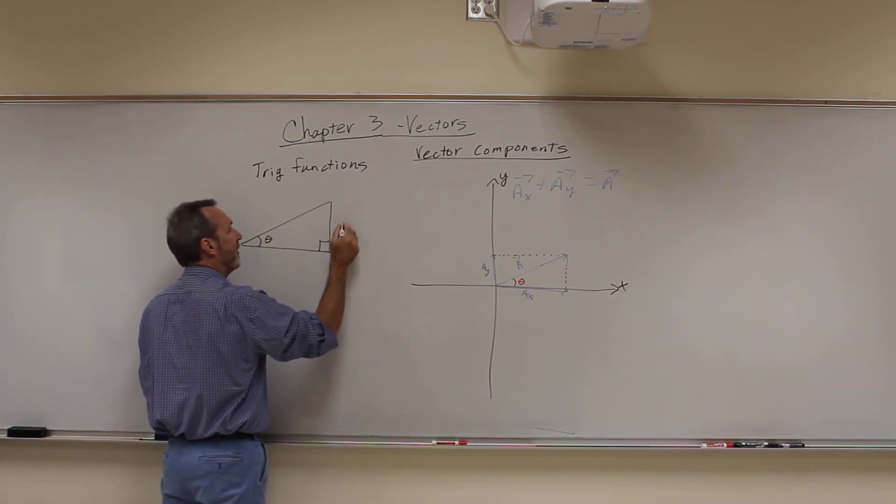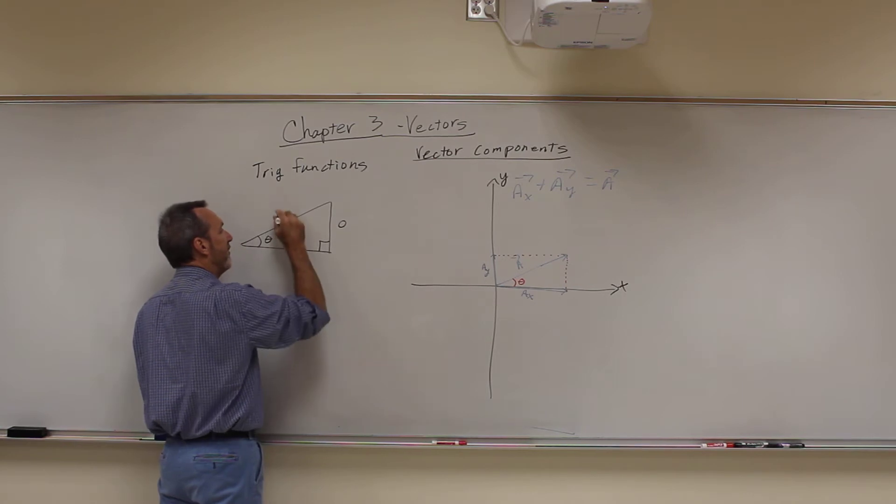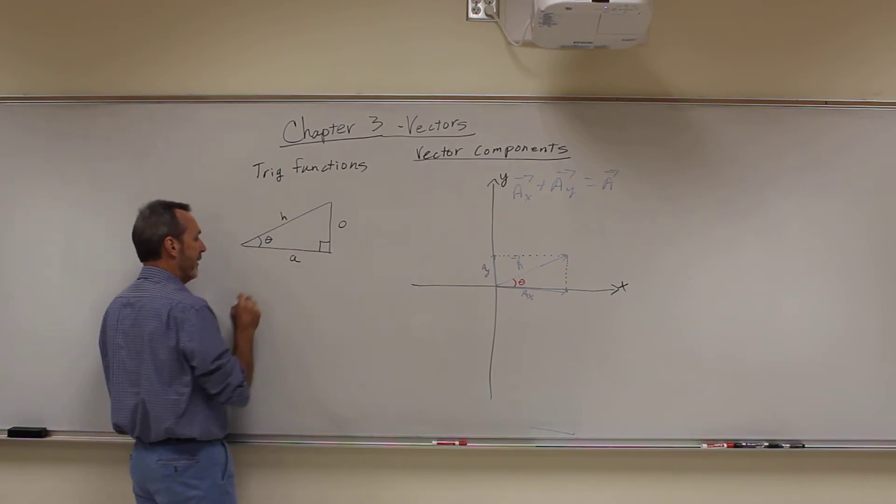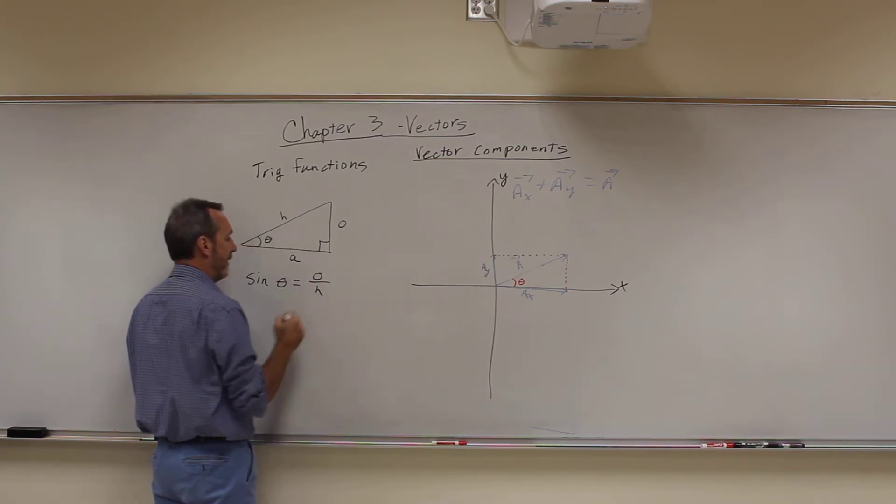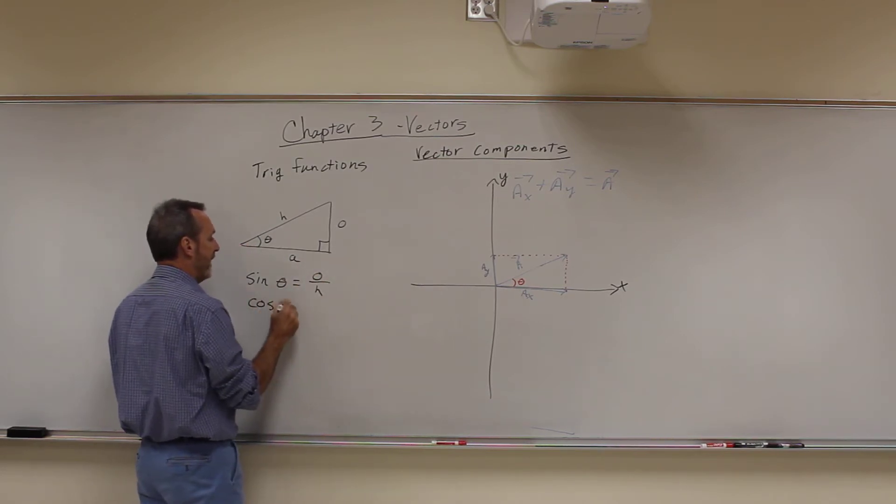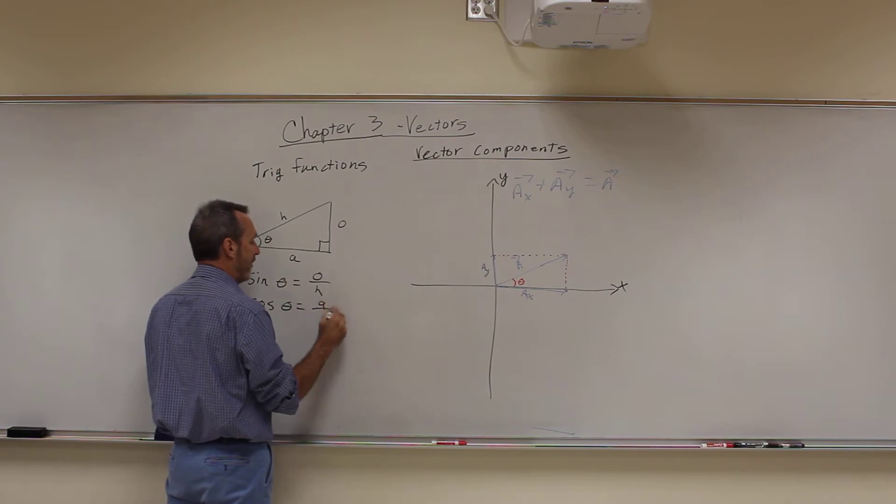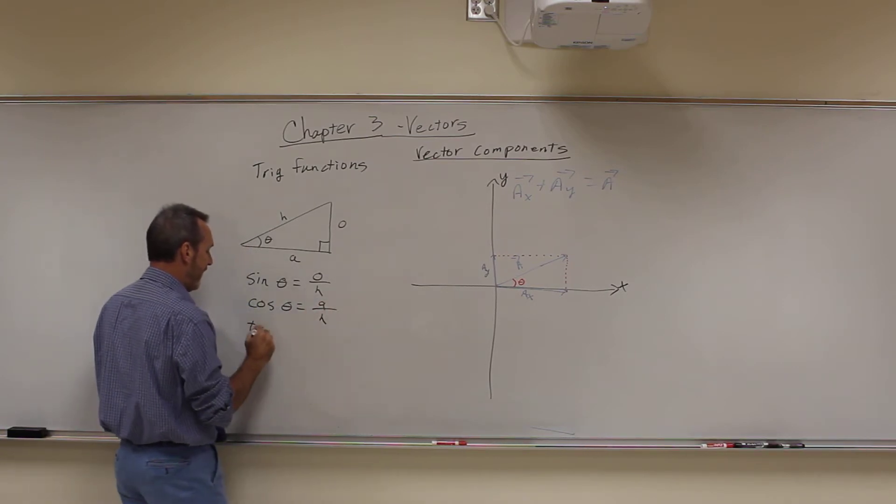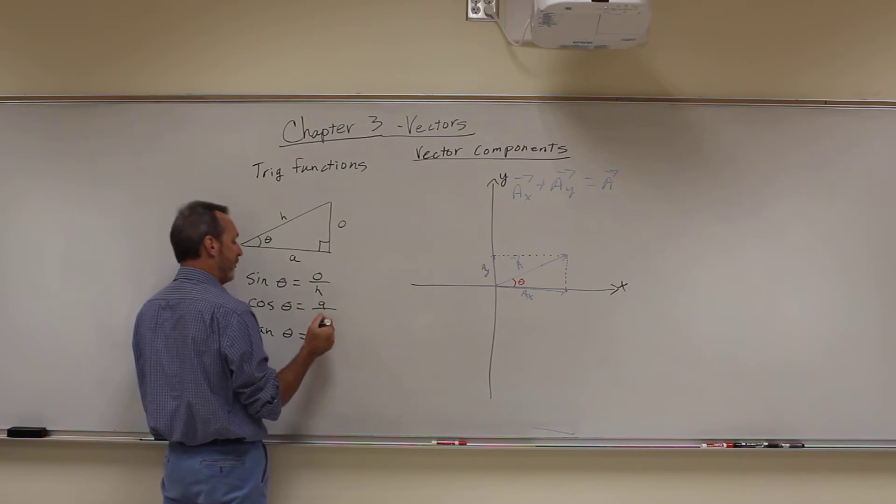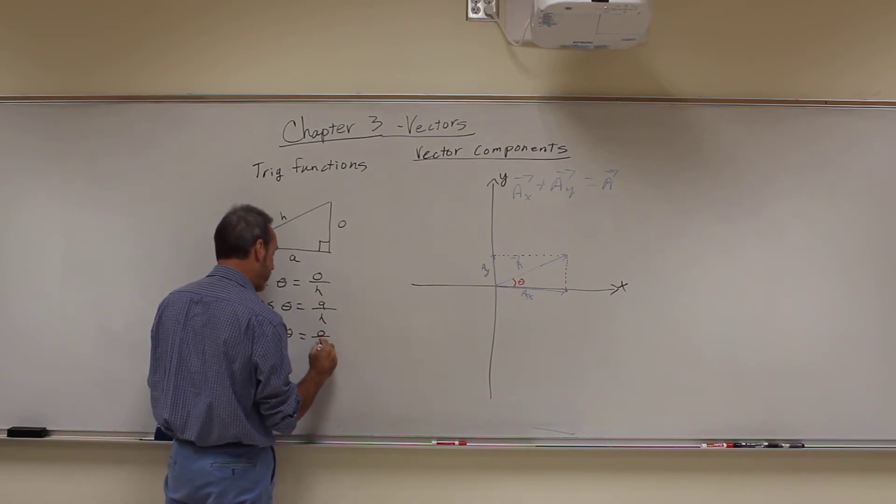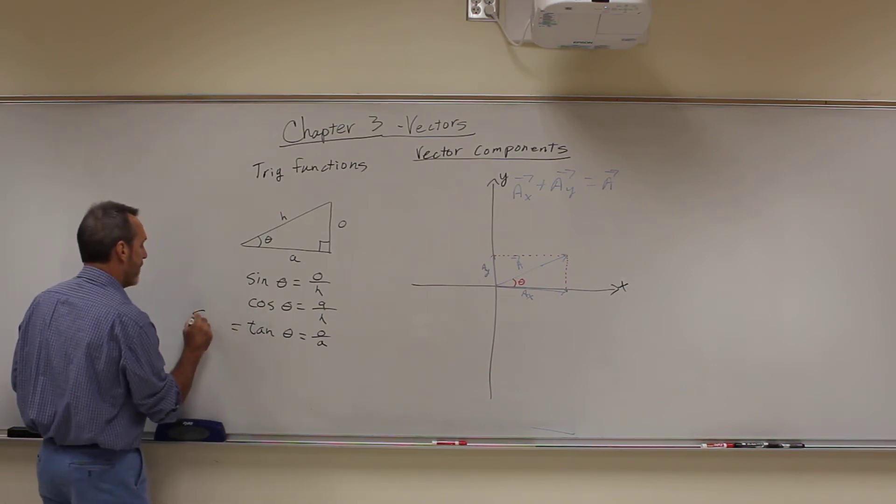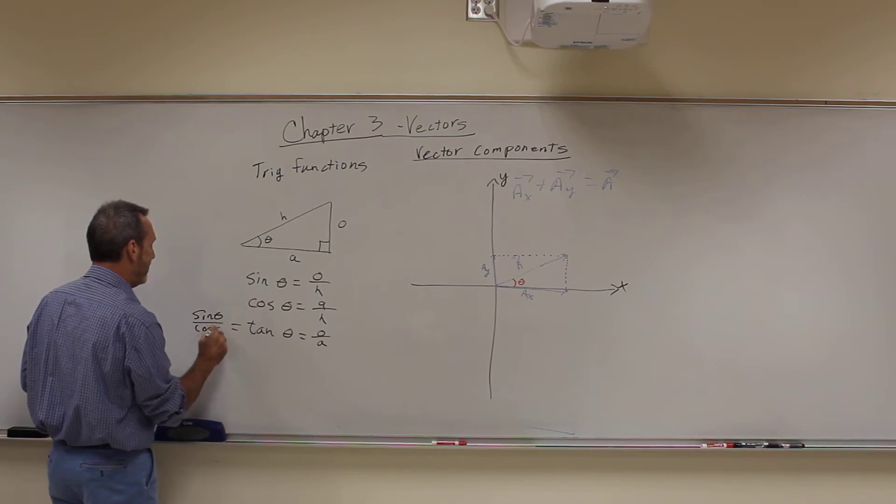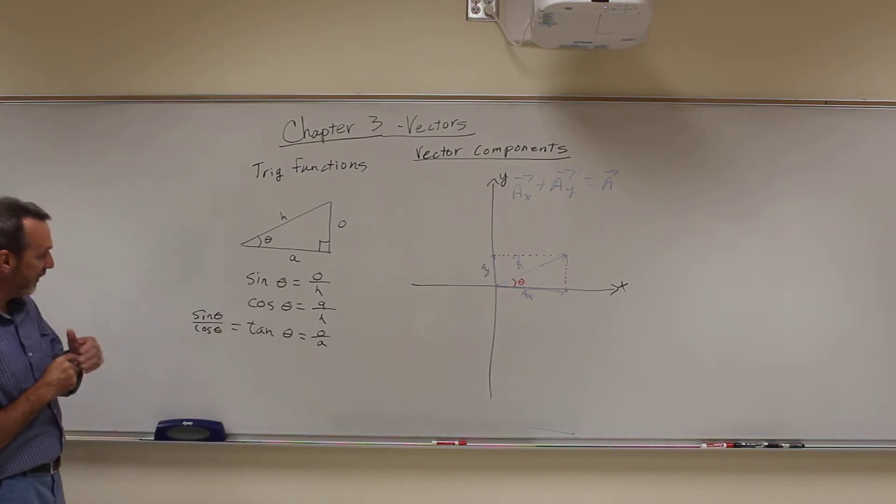If I have my angle theta here, this is the opposite, this is the adjacent side, this is the hypotenuse. Now remember the sine of theta is the opposite over the hypotenuse. Cosine of theta is the adjacent over the hypotenuse. And the tangent of theta is equal to the opposite over the adjacent, or the sine over the cosine. Those are the basic definitions of trig functions.